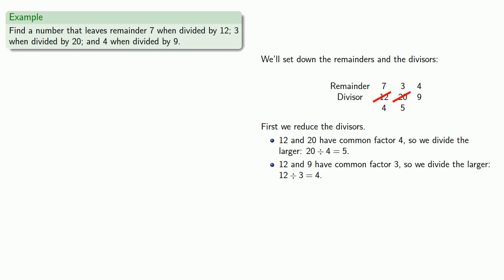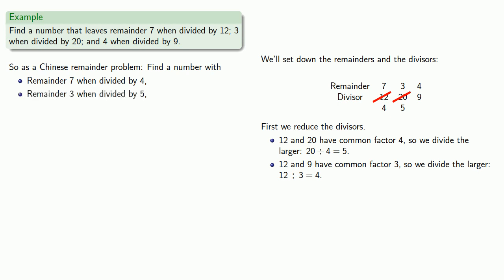We can now restate our problem as a Chinese remainder problem: find a number with remainder 7 when divided by 4, 3 when divided by 5, and 4 when divided by 9.